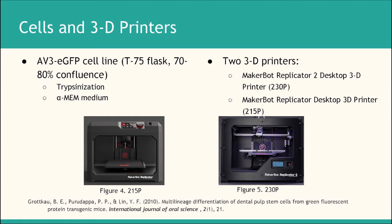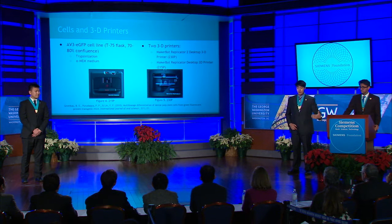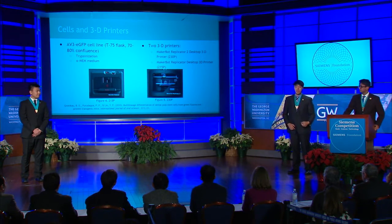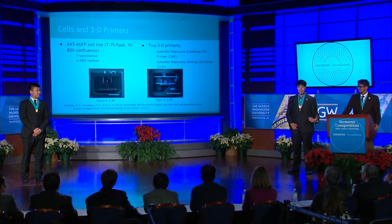In the lab, we have two separate 3D printers, named 230P and 215P, as shown in Figures 4 and 5. The main difference between these two printers is the extrusion temperature: 230 degrees Celsius for 230P and 215 degrees Celsius for 215P. All 3D printed structures were printed at 10% infill standard resolution with PLA filaments, and before plating any cells onto the surface, we sterilized them with ethylene oxide treatment, which was done for us by Stony Brook University.